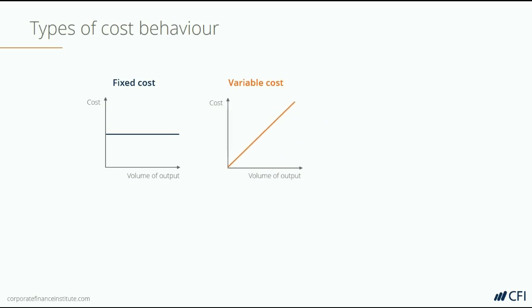Then there are variable costs. As you can see in this chart, the cost is a linear line and it increases as volume increases with a consistent ratio. The line may not always be straight — it may not always be a linear relationship — but let's assume that in the simplest terms it is. An example of this would be credit card processing fees on a transaction. Imagine a retail business that sells a product and the credit card companies charge 3% for every transaction. There is a direct correlation between the number of units sold and the credit card fees that the company will incur. As the credit card transactions double, the cost doubles. So that's a simple example of a variable cost.